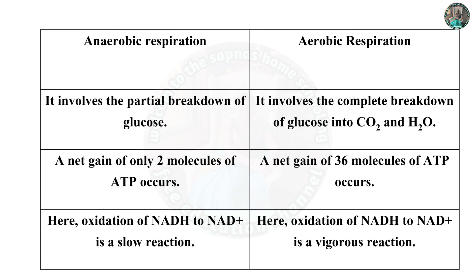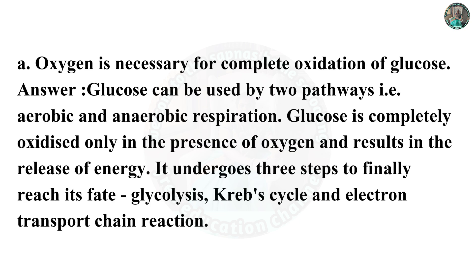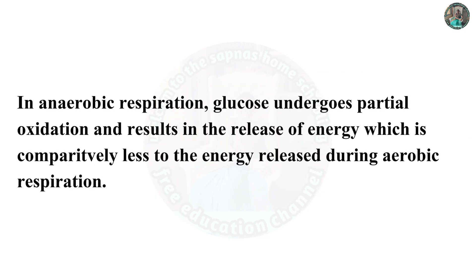Question 4: Give scientific reasons. A. Oxygen is necessary for complete oxidation of glucose. Answer: Glucose can be used by two pathways — aerobic and anaerobic respiration. Glucose is completely oxidized only in the presence of oxygen and results in the release of energy. It undergoes three steps: glycolysis, Krebs cycle and electron transport chain reaction. In anaerobic respiration, glucose undergoes partial oxidation and results in the release of comparatively less energy.